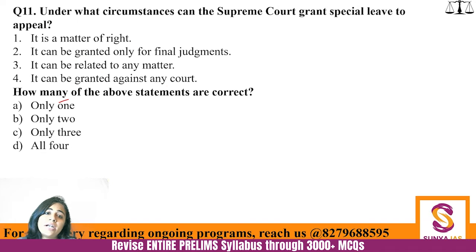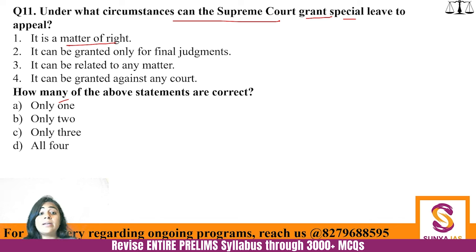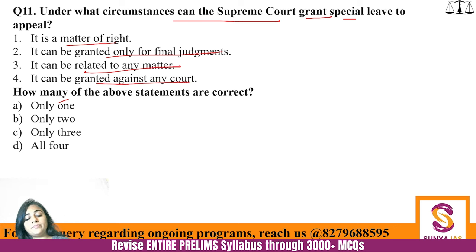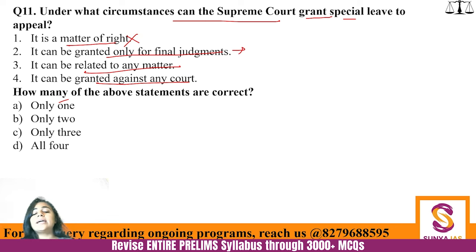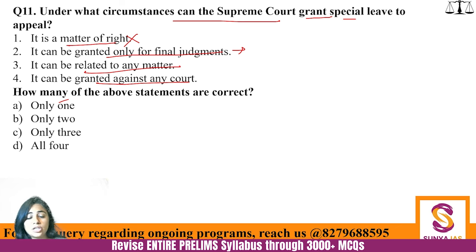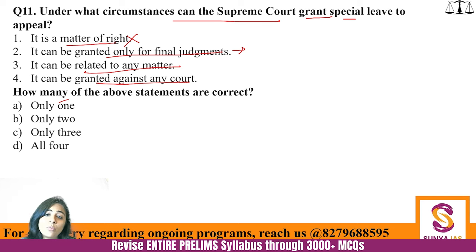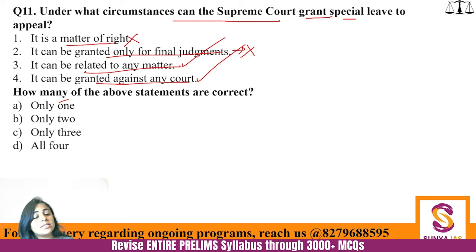Question 11 — Under what circumstances can the Supreme Court grant special leave to appeal? Statement 1: it is a matter of right — incorrect. Statement 2: it can be granted only for final judgments — incorrect, it can be issued at any stage. Statement 3: it can be related to any matter — correct. Statement 4: it can be granted against any court — correct. So only two statements are correct.